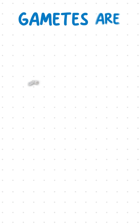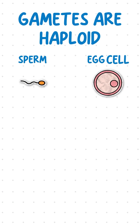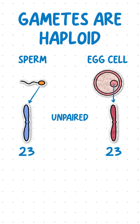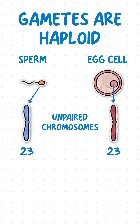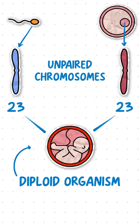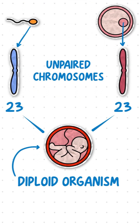In contrast, gametes like sperm and egg cells are haploid, meaning they contain only 23 unpaired chromosomes, which fuse together forming a diploid organism.